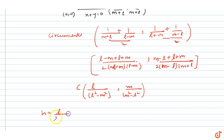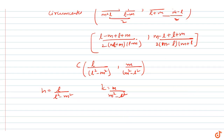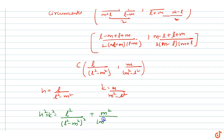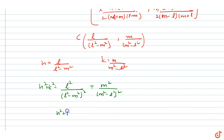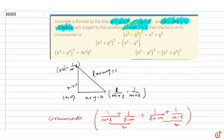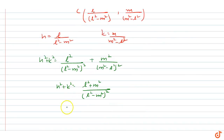So h equals l divided by (l squared minus m squared), and k equals m divided by (l squared minus m squared). Now, computing h squared plus k squared, we get l squared over (l squared minus m squared) squared plus m squared over (l squared minus m squared) squared, which equals (l squared plus m squared) over (l squared minus m squared) squared. Since l squared plus m squared equals 1, we get h squared plus k squared equals 1 over (l squared minus m squared) squared.